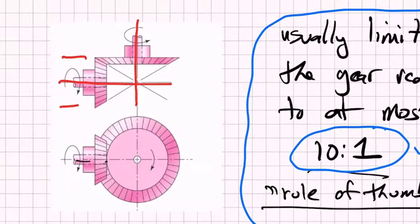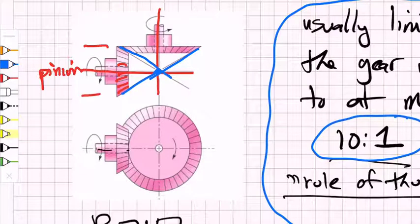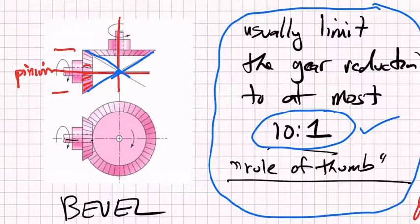This figure shows a bevel gear transmitting rotational power between two perpendicular axes. The smaller gear is again the pinion, and the teeth must be cut at interesting angles along a cone whose apex intersects at the axes' intersection. Bevel gears are used to transmit power between non-parallel axes. The gear ratio depends on the size ratio of the two meshing gears — you can accentuate torque and reduce speed, or increase speed and reduce torque. The rule of thumb is never to exceed a 10-to-1 gear ratio on a single stage.